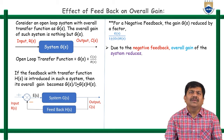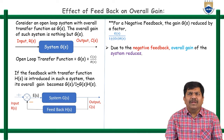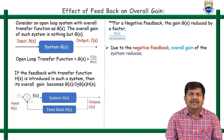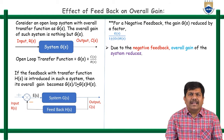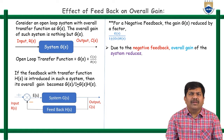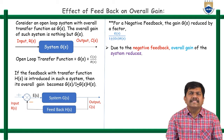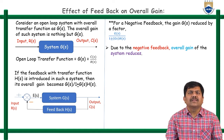C(S) is the Laplace transform of the output and R(S) is the Laplace transform of the input. If feedback with transfer function H(S) is introduced in such a system, the overall gain becomes G(S) divided by 1 plus or minus G(S)·H(S). The forward path transfer function is G(S), the feedback path transfer function is H(S). R(S) is the input, C(S) is the output, and E(S) is the error signal.